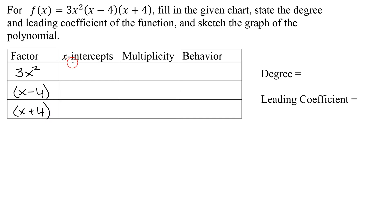Now we need to find the x-intercepts, and we find the x-intercepts of any function by setting the function equal to 0. So I'm going to have 0 equals 3x squared times x minus 4 times x plus 4. And if I have 3 things multiplied together, equaling 0, we solve that by setting each of them equal to 0.